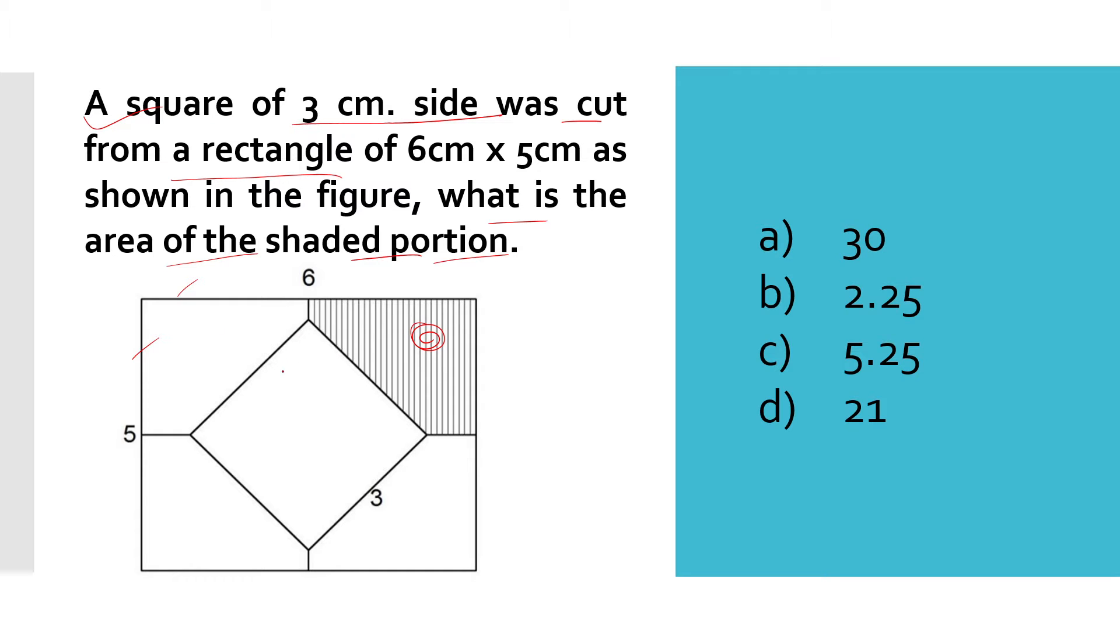If we remove the area of the square from the whole rectangle and divide by 4, we will get the area of this portion. So 6 into 5 minus 3 into 3 divided by 4. 30 minus 9 by 4 equals 21 by 4, which comes to 5.25. The correct answer is 5.25.